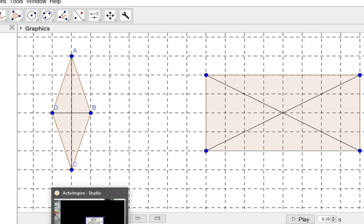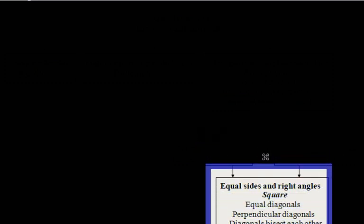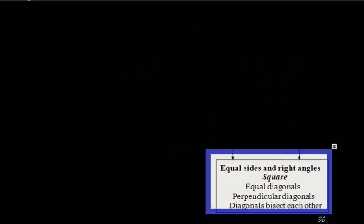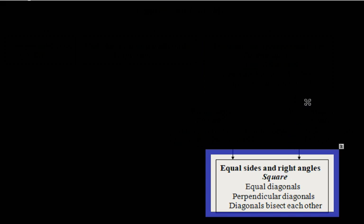Finally, the square is a quadrilateral with four equal sides and four right angles. It has the right angles from the rectangle and the equal sides from the rhombus. Therefore, the square has equal diagonals — because it is a rectangle — and perpendicular diagonals — because it is a rhombus — and the diagonals bisect each other because it is a parallelogram.